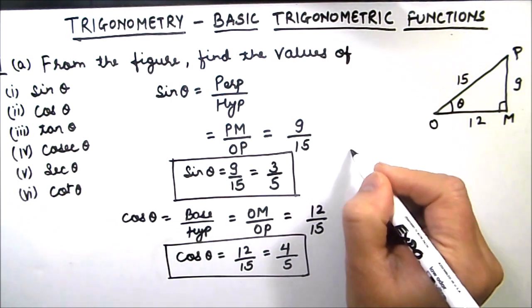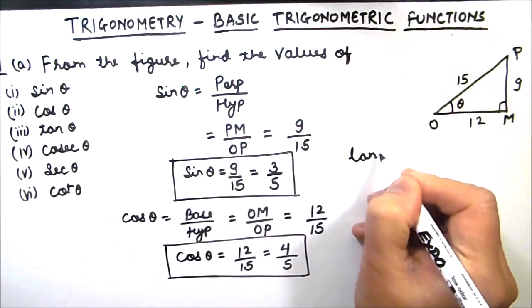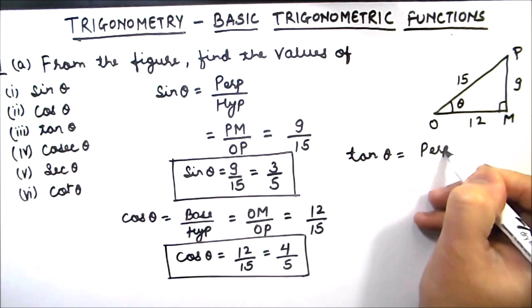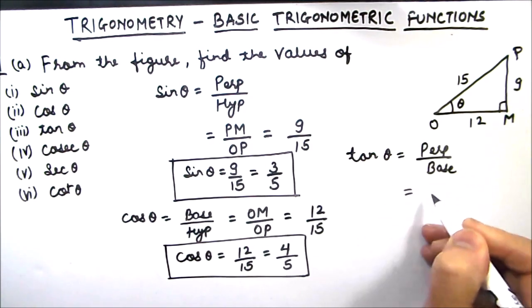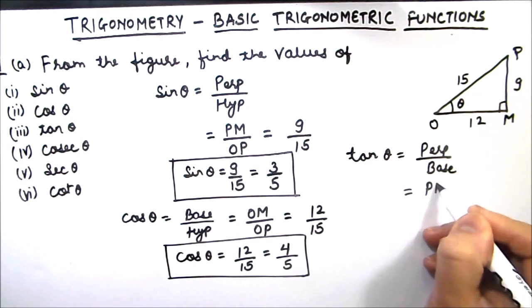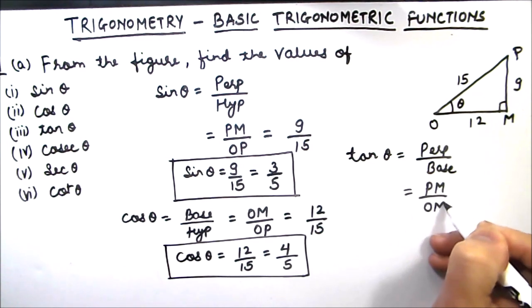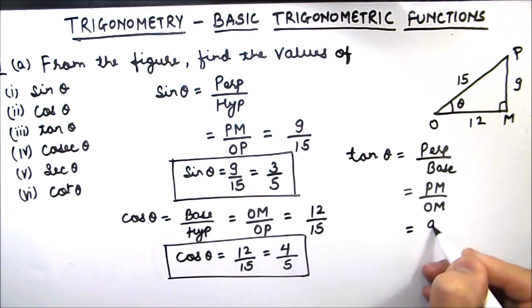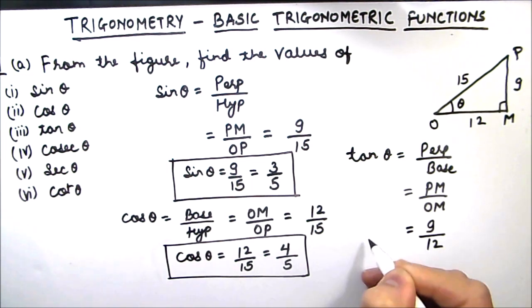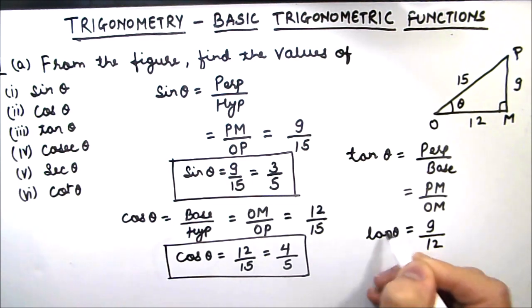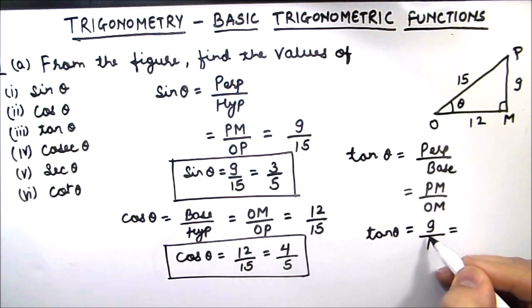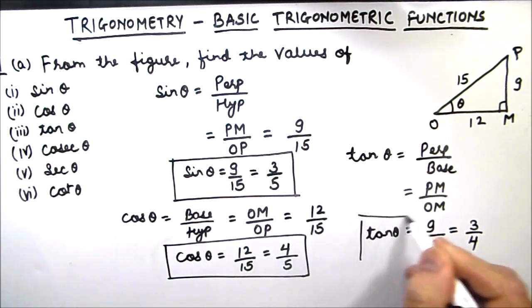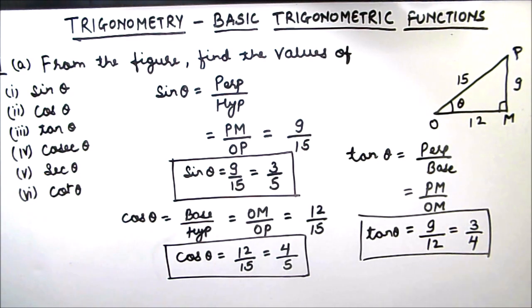Now we will find tan theta. Tan theta is perpendicular over base, which is PM over OM in this triangle. PM is 9 and OM is 12. Tan theta is 9 by 12, which can be reduced to 3 times 3 over 3 times 4, giving us 3 by 4. This is the value of tan theta.